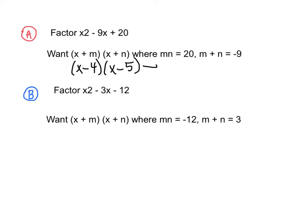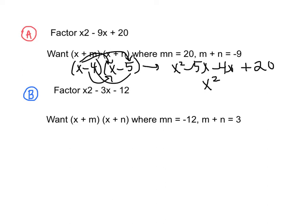So we could have x minus 4 and x minus 5. If we multiply that out, we get x squared minus 5x minus 4x plus 20, which confirms these are factors of our equation. So our answer is x minus 4 times x minus 5.